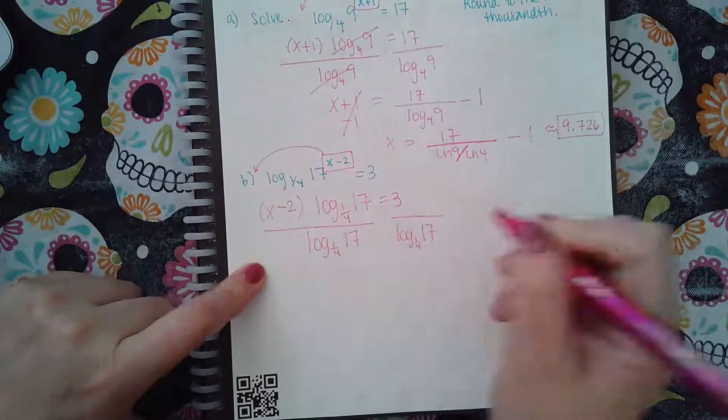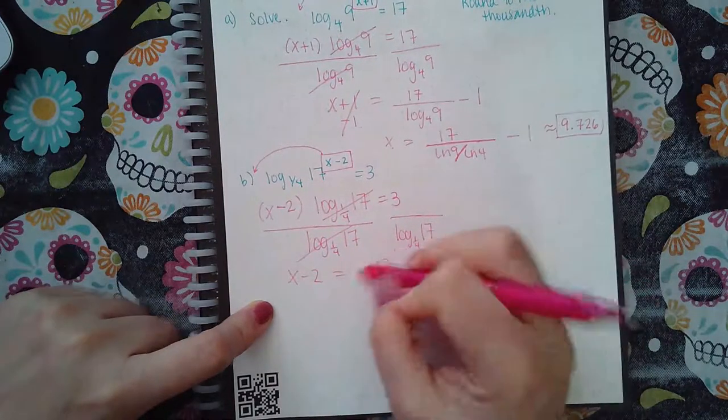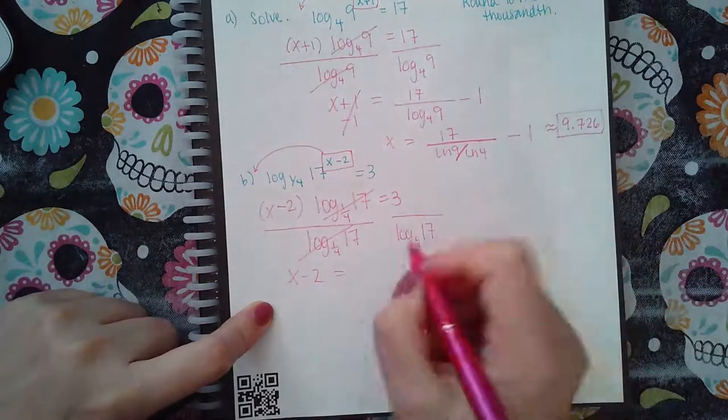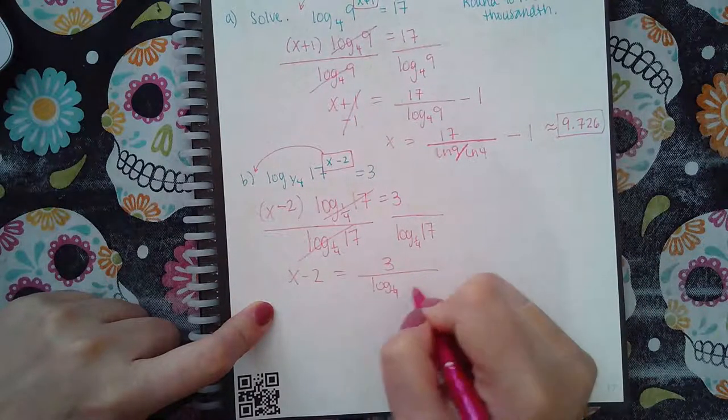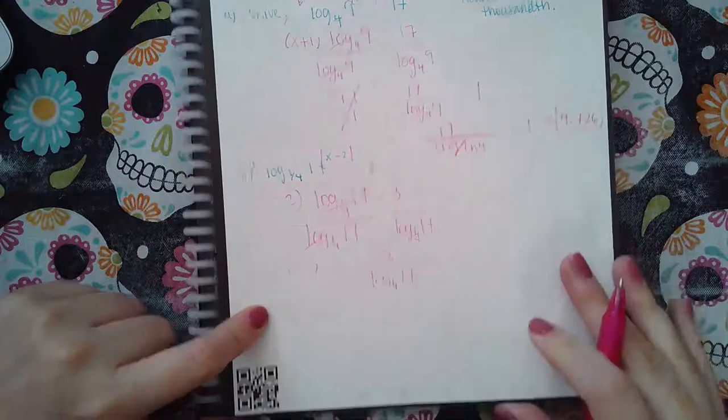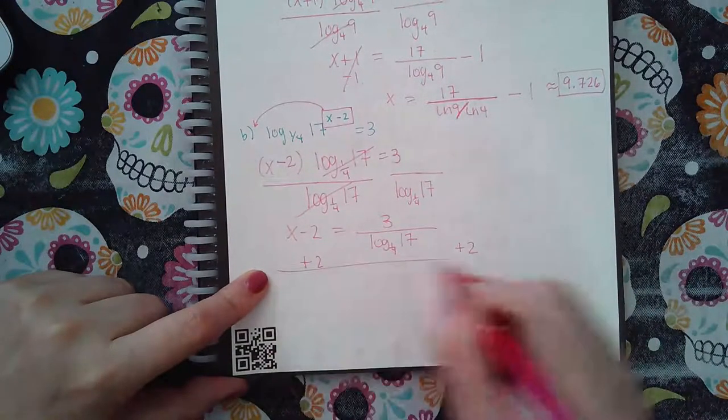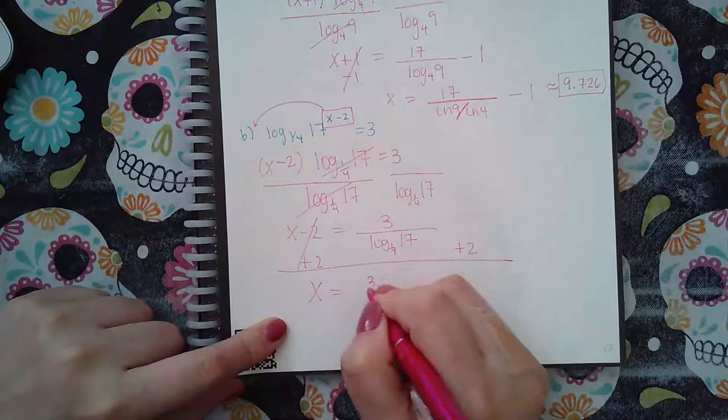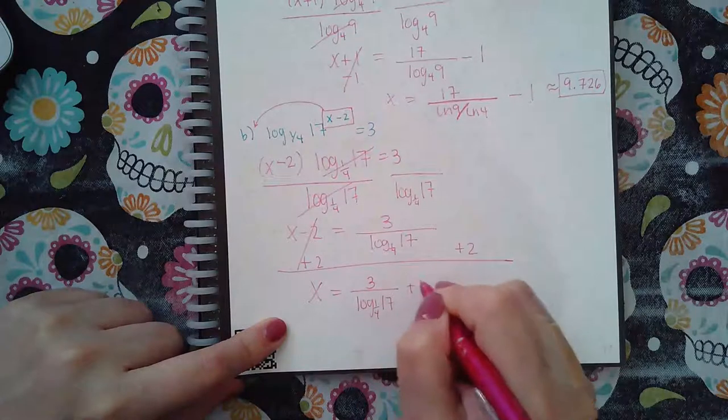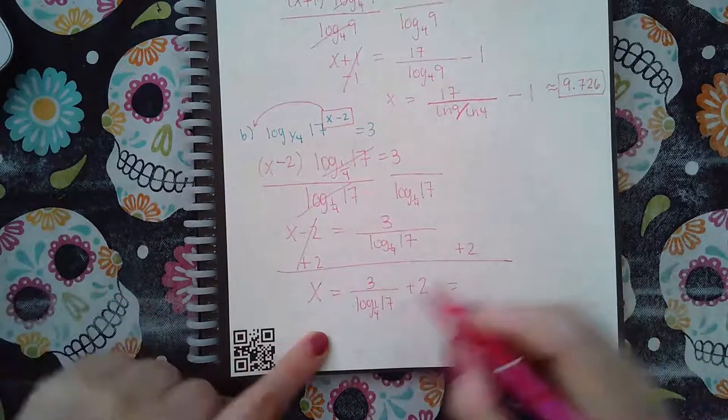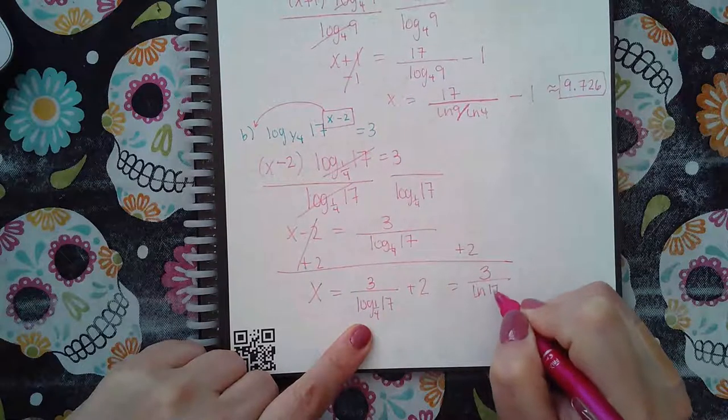And so that goes away and I get X minus 2 equal to 3, not 13—let's not change the problem, right—3, and then log base one-fourth of 17. And then to finally solve for X we're going to add 2 on both sides, so we get X equals 3 over log base one-fourth of 17 plus 2. Now I can use the change of base for that denominator: it would be LN of the argument over LN of the base.